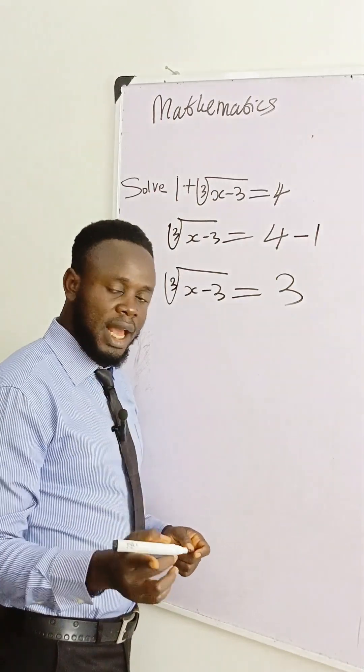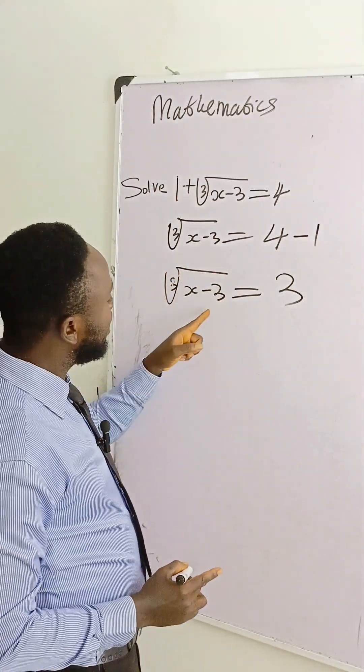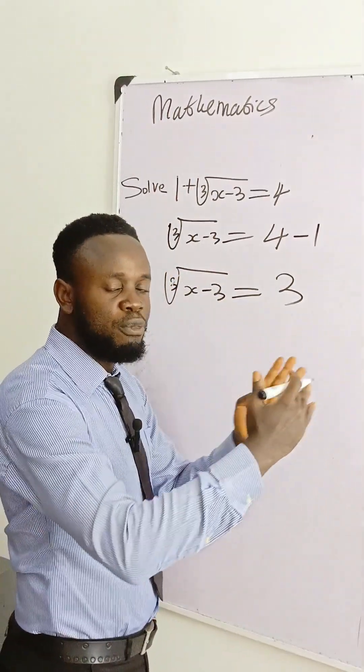Then cube root of x minus 3 is equal to 4 minus 1, which is 3.